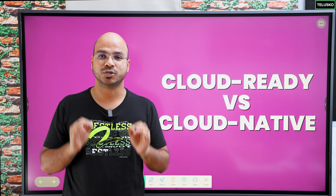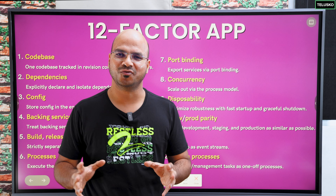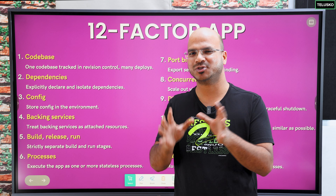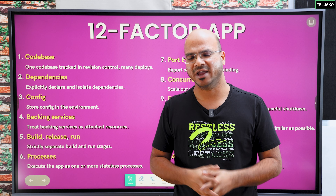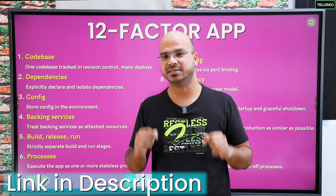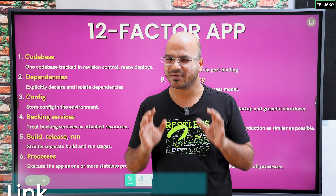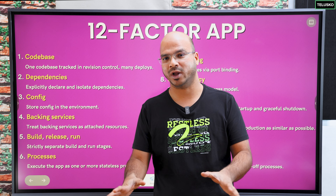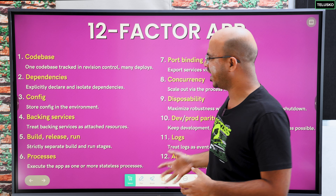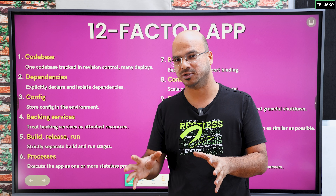These rules are called the 12-factor app. You have to follow these 12 rules or standards. There is a website as well — you can find the link in the description — which talks about all 12 rules in detail. I'll try to simplify it so that you understand in one go. These are the 12 factors you have to follow to build a cloud native application.